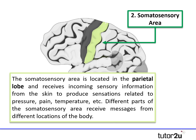The somatosensory area is located in the parietal lobe and receives incoming sensory information from the skin, producing sensations like pressure, pain, and temperature. Different parts receive messages from different locations in the body. Interestingly, nearly half of the somatosensory receptors are in the face and facial regions. Robertson found this area is really adaptable — people who read Braille have a larger somatosensory area for their fingertips, which relates to the idea of plasticity.